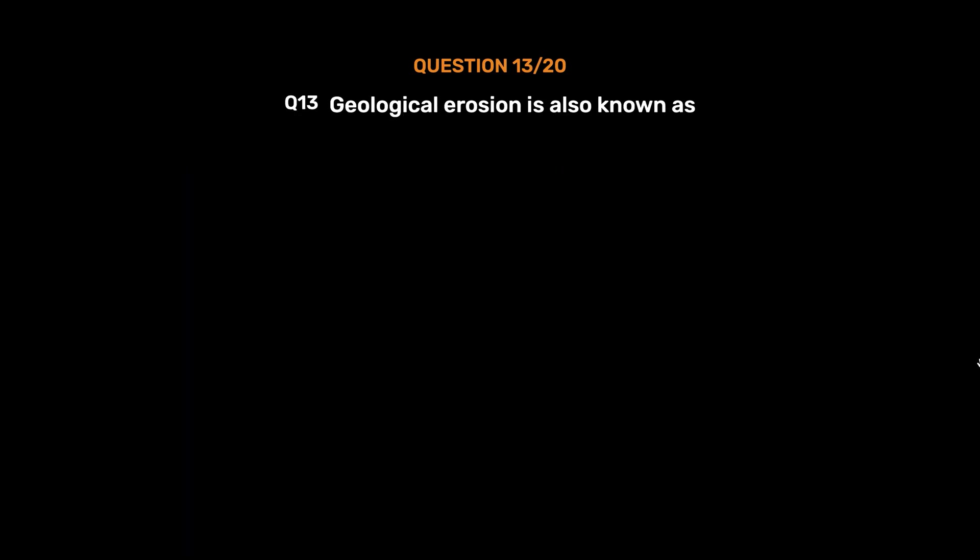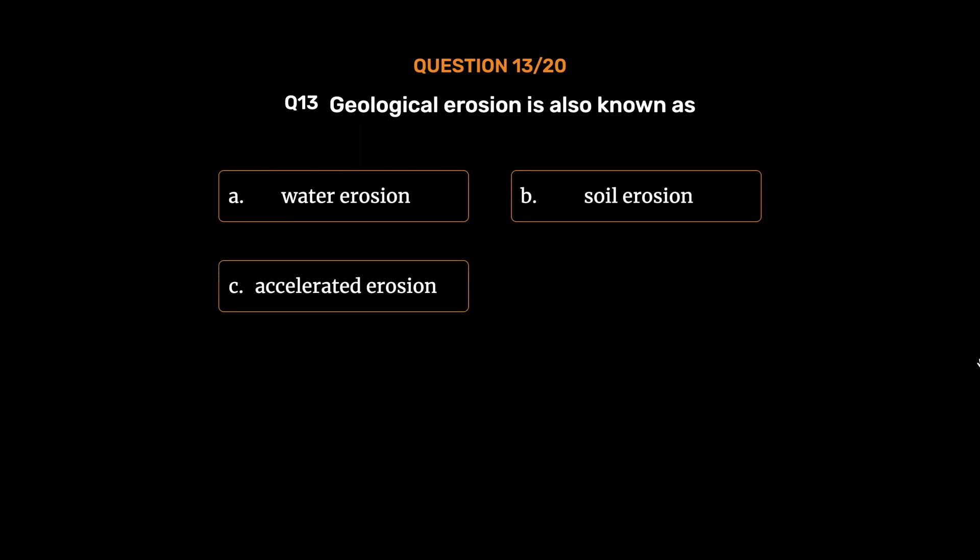Question number 13. Geological erosion is also known as: option A, Water erosion; option B, Soil erosion; option C, Accelerated erosion; option D, Natural erosion. The correct answer is option D, Natural erosion.